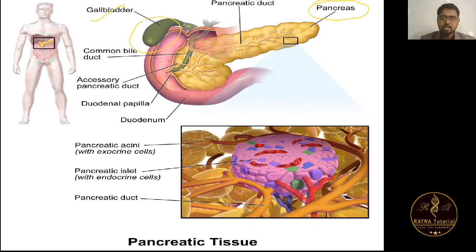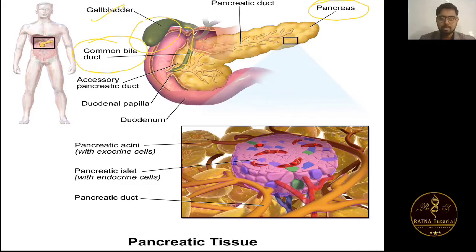The duct coming from the gall bladder is called the common bile duct. The duct coming from the pancreas is called the accessory pancreatic duct.